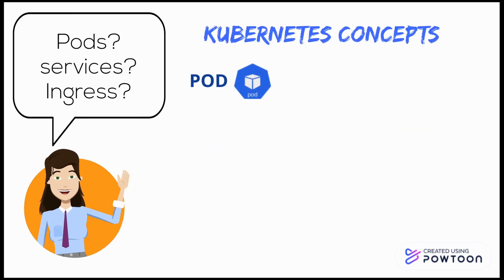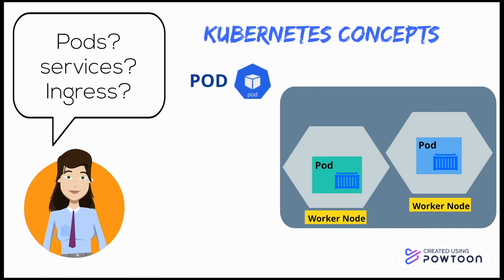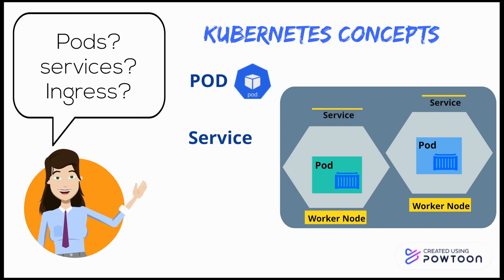A pod is the smallest unit in Kubernetes. A pod acts as a wrapper for a single container containing the application code. We can have one or more pods in a worker node, and one or more containers in a pod if they are highly dependent on each other. Normally, an application and its database are in two different pods — this is called one container per pod. Each pod has its own internal IP address. If a pod fails, Kubernetes doesn't try to fix it; instead it creates a new pod called a replica, which gets a new IP address. Maintaining changing IP addresses is a hassle, which is why services exist.